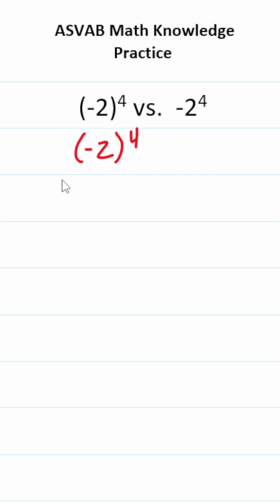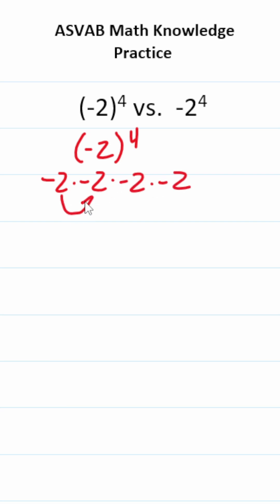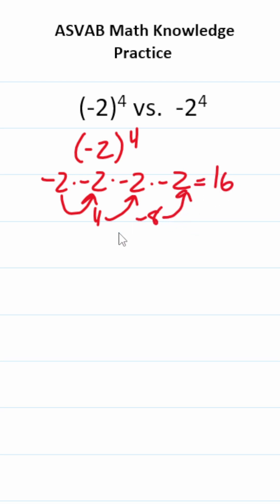When you have parentheses, that means you can do this: negative 2 times negative 2 times negative 2 times negative 2. Negative times a negative is a positive. Positive times a negative is a negative. Negative times a negative is a positive.